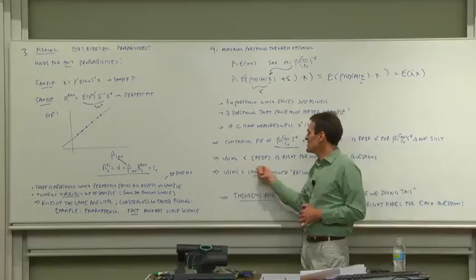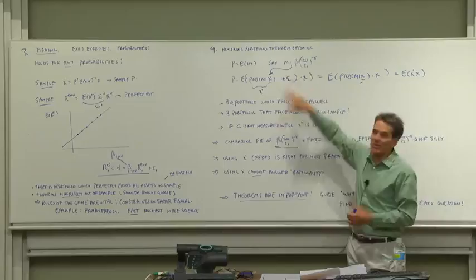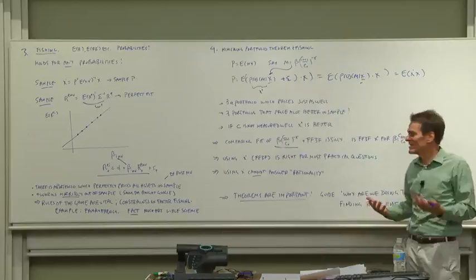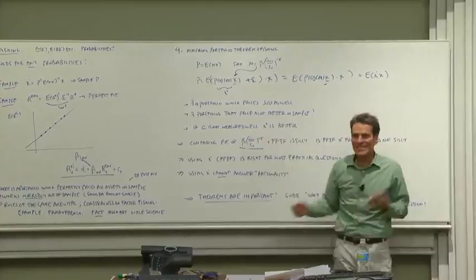On the other hand, what does the theorem tell us? Using the mimicking portfolio is right for most practical questions and would be right even if we had the true model, which we don't have. If you have the true model, you get consumption data quarterly at best. You want to price something in real-world pricing on a day-by-day basis. You want to find out whether the latest anomaly is just a version of all the other anomalies we've seen.